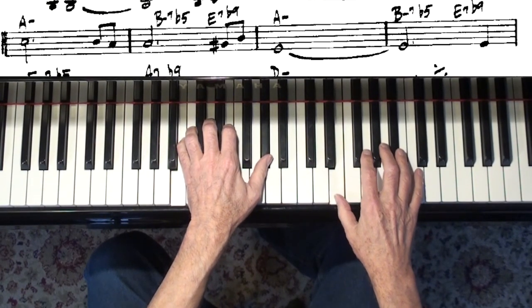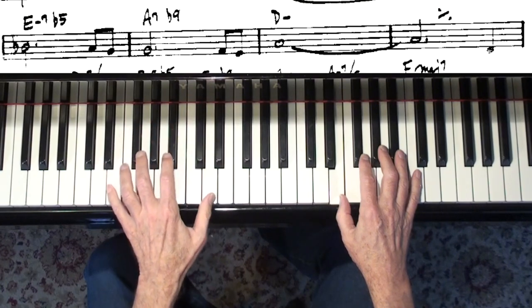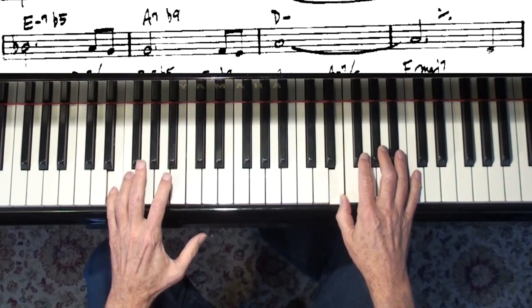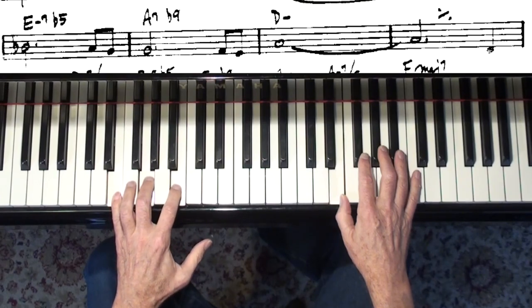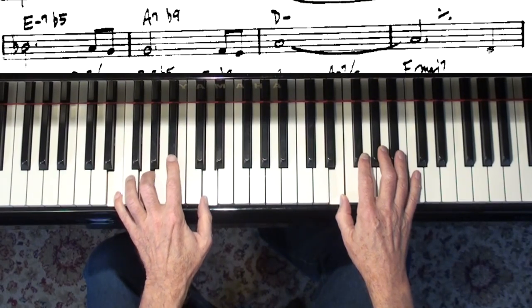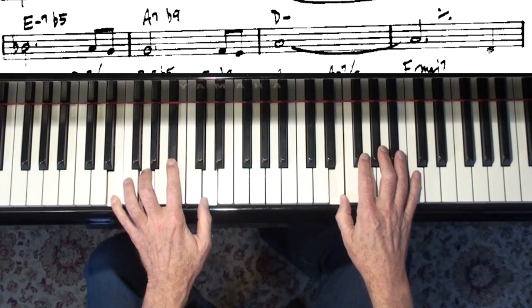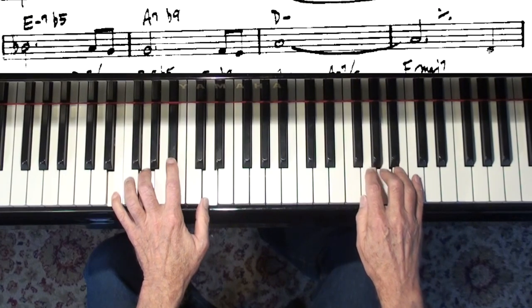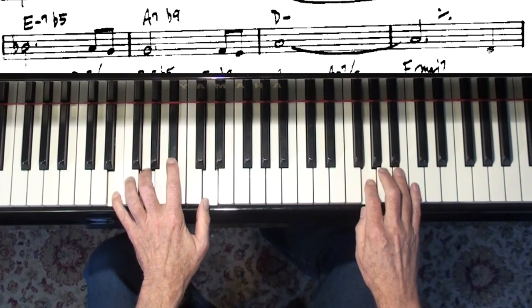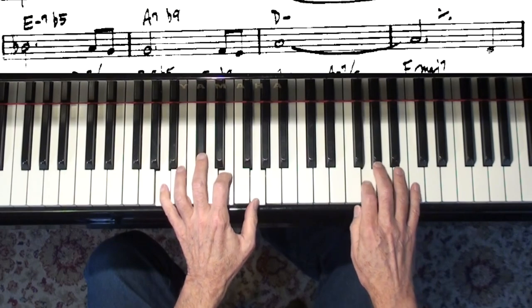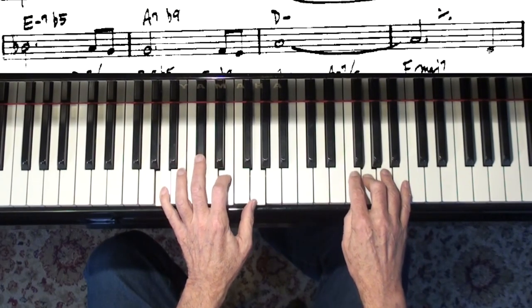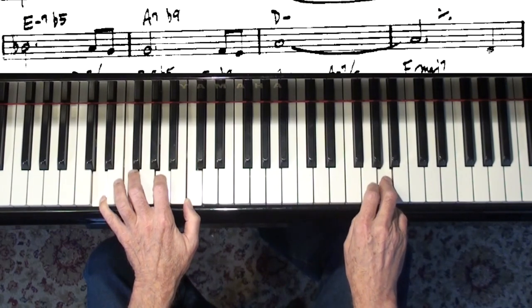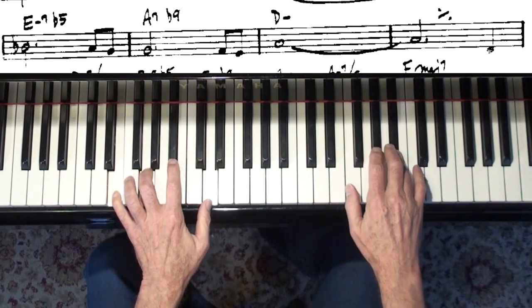Now, we go to an E minor 7 flat 5. And for this one, I'm going to jump down here to root position. Put the E on the bottom. We've got a minor triad and a 7th. But we're going to flat the 5. So it looks like this. I'm going to do an A7 in root position. Because I want my listeners to really hear that chord progression. So, again.